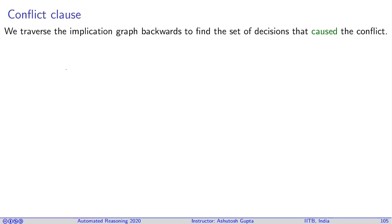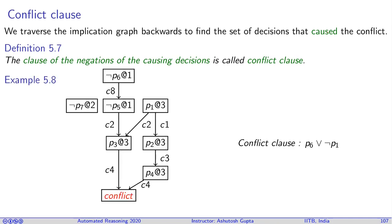So what is a conflict clause? We traverse the implication graph backwards to find the set of decisions that cause the conflict. The negation of the causing decisions is called the conflict clause. A bit of a mouthful definition, but one example would make it completely clear. Here is our implication graph which we have built in the previous slide. So look at the causing decisions. If you have a conflict and go backwards, these two decisions made the conflict. This decision has no impact on the conflict. Therefore, we will say not p6 and p1 are my causing decisions, and we negate each one of them. So negation of not p6 is p6, negation of p1 is not p1, and we take the disjunction. This is my conflict clause.